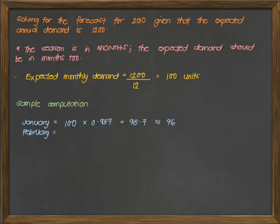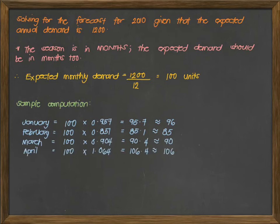For February, again, that will be 100 times the seasonal index for February, which is 0.851, which will give us an answer of 85.1 or equivalent to 85 units. Continuing with our answers, we will have forecast for any given month. We can compute for the March forecast and for the April forecast and so on.